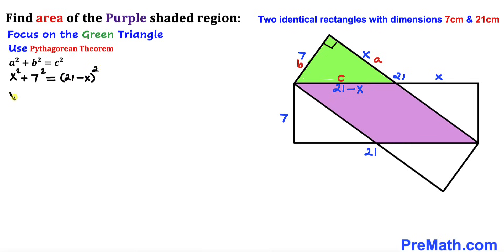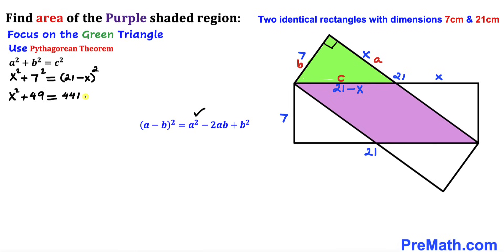Let's simplify. We get x squared plus 7 squared, which is 49, on the left. Now let's recall the identity: (a minus b) squared equals a squared minus 2ab plus b squared. Applying it to the right-hand side binomial gives us 441 minus 42x plus x squared.